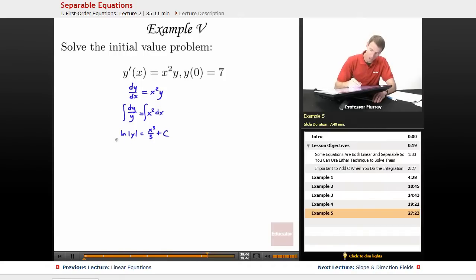So now I'm going to try to solve for y. I'm going to raise e to both sides. e to the natural log of absolute value of y is equal to, be very careful here, e to all of the right-hand side, x cubed over 3 plus c. That all gets put in the exponent of e, not just the x cubed over 3 part.